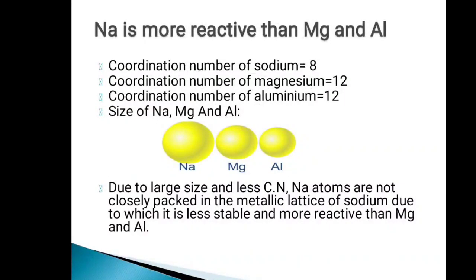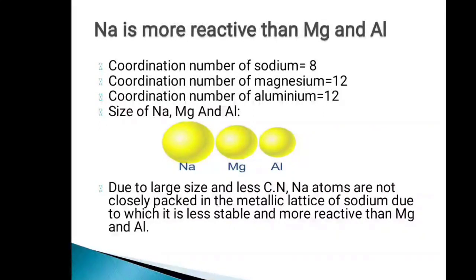The reason for this is, first of all, if we look at the coordination number: sodium has a coordination number less than 8, whereas magnesium and aluminum have coordination number 12. Coordination number refers to the number of atoms surrounding a metal atom in its metallic lattice form. Sodium can be attached to 8 other atoms, so sodium's coordination number is 8.